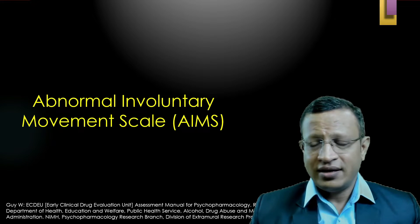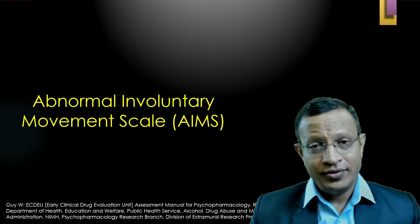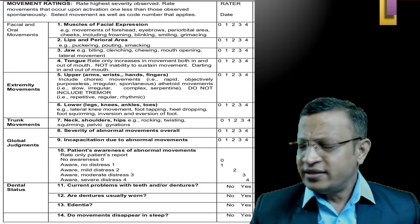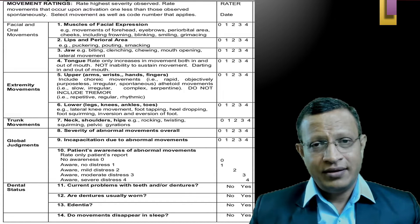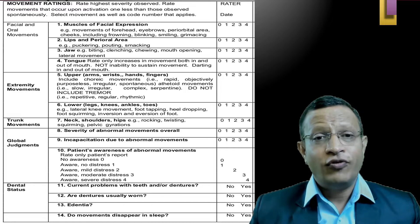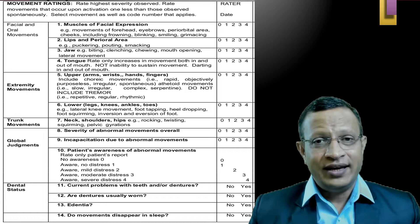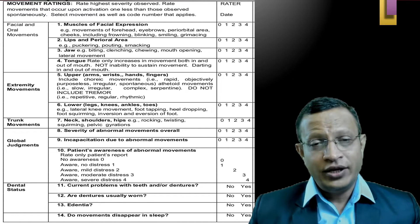The Abnormal Involuntary Movement Scale is used in tardive syndrome, tardive dyskinesia, tardive dystonia, akathisia, and various other movement syndromes. It takes an experienced clinician around 2 minutes, and a trained person around 5 minutes. It is easily trainable and has 14 items, with the last 4 items for dental status. There are 5 domains which need to be assessed using the Abnormal Involuntary Movement Scale.